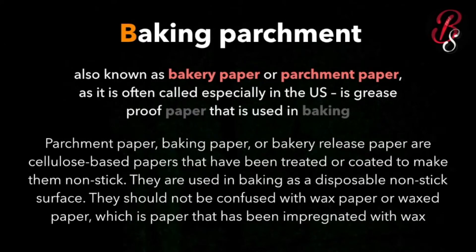When you're making cookies, you put the parchment paper so they don't stick to the bottom and don't burn. When something sticks, the heat is absorbed by the cookie, causing it to burn. That's why we use baking parchment paper — for cakes and all baked things — so we can easily pull them out of the mold. Parchment paper is a cellulose-based paper that has been treated or coated to make it non-stick, used as a disposable non-stick surface.